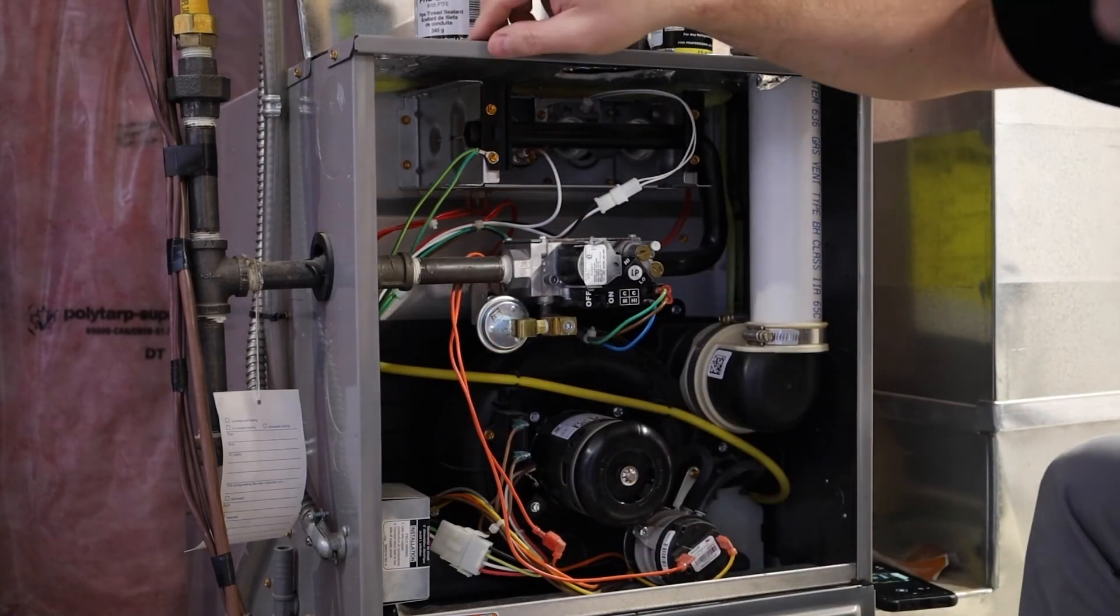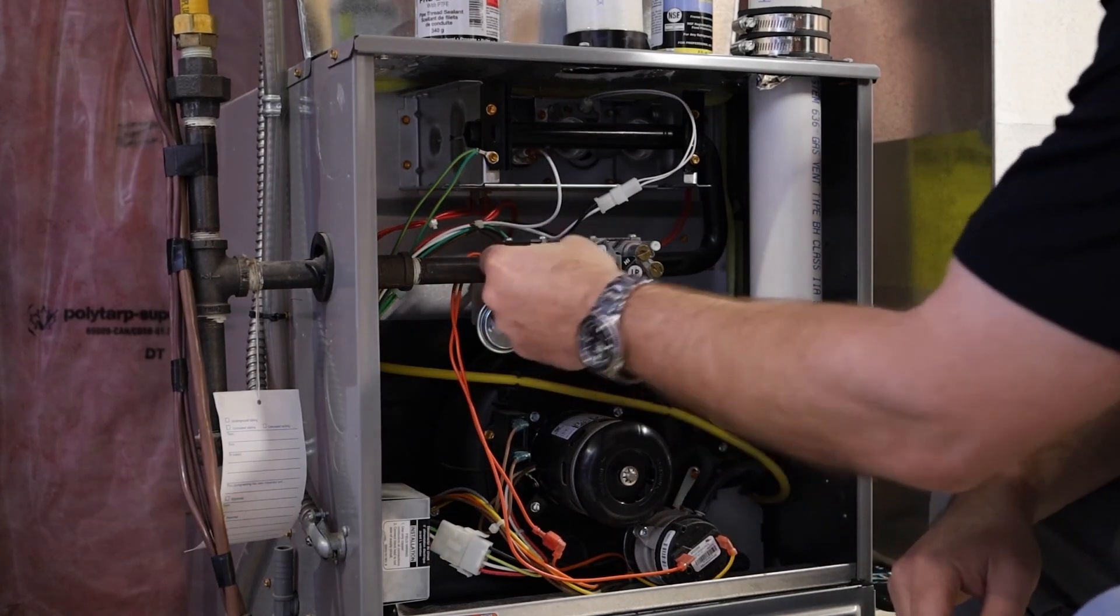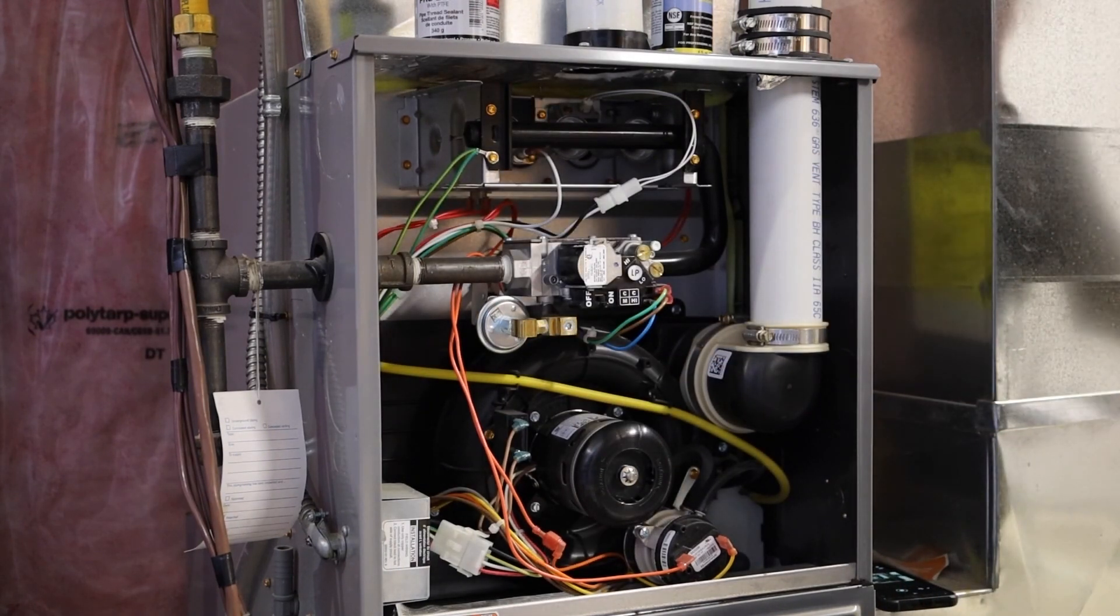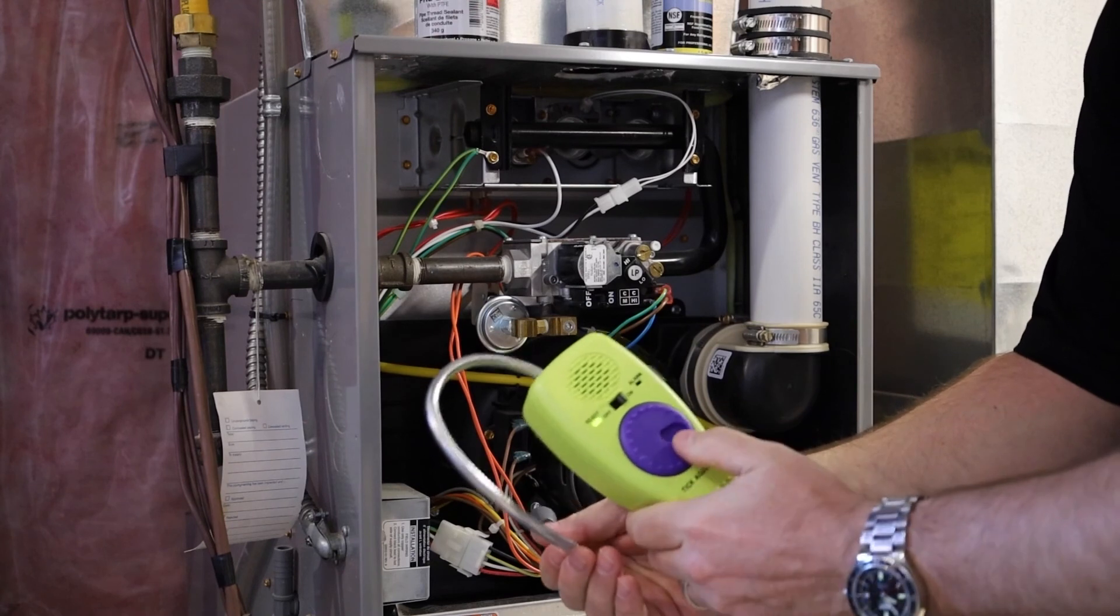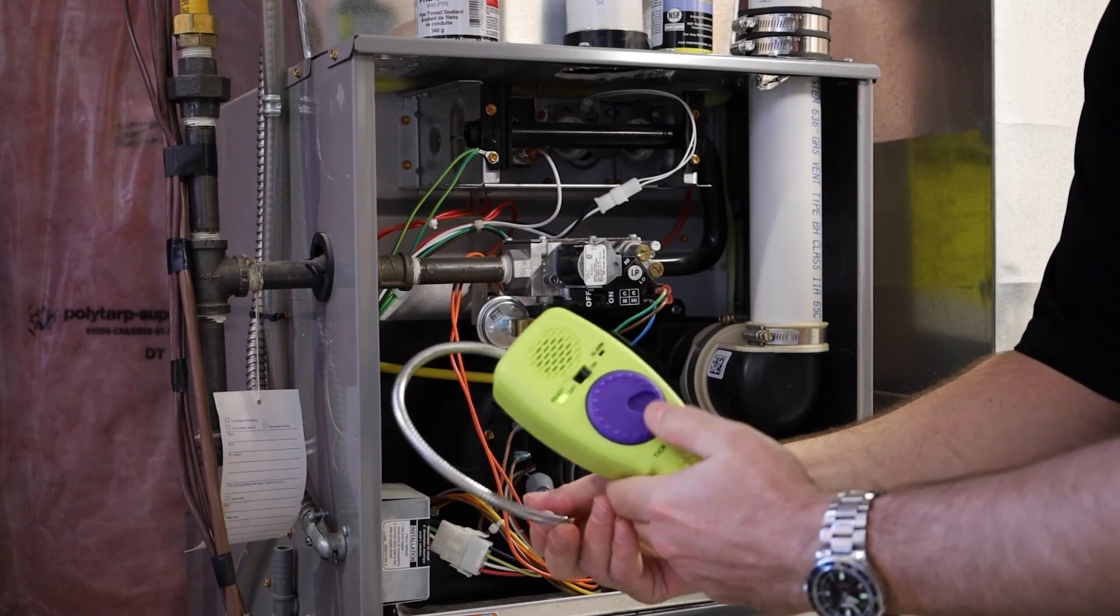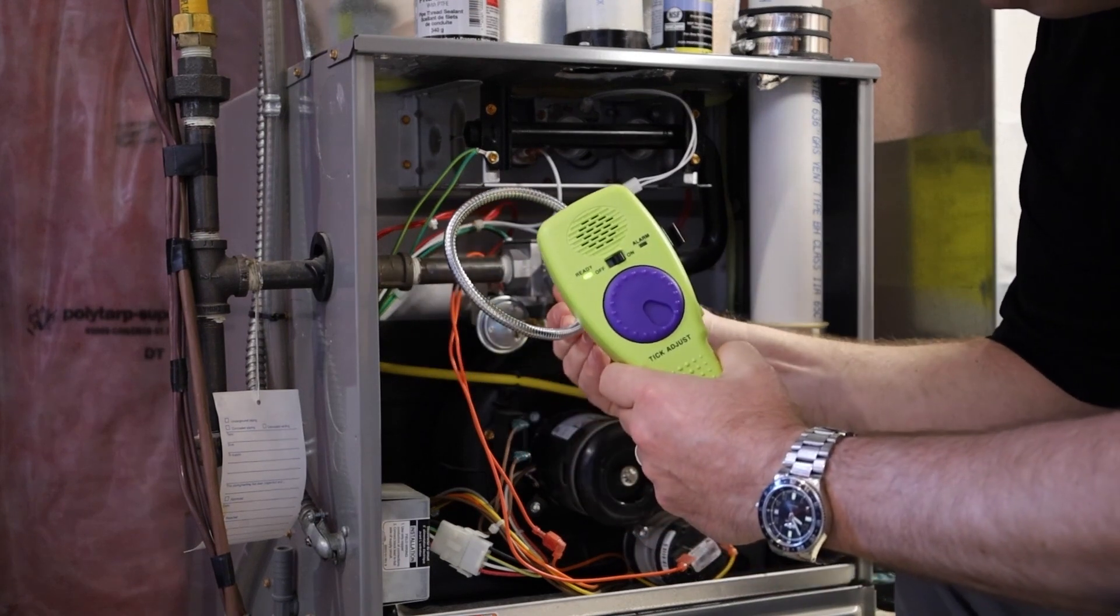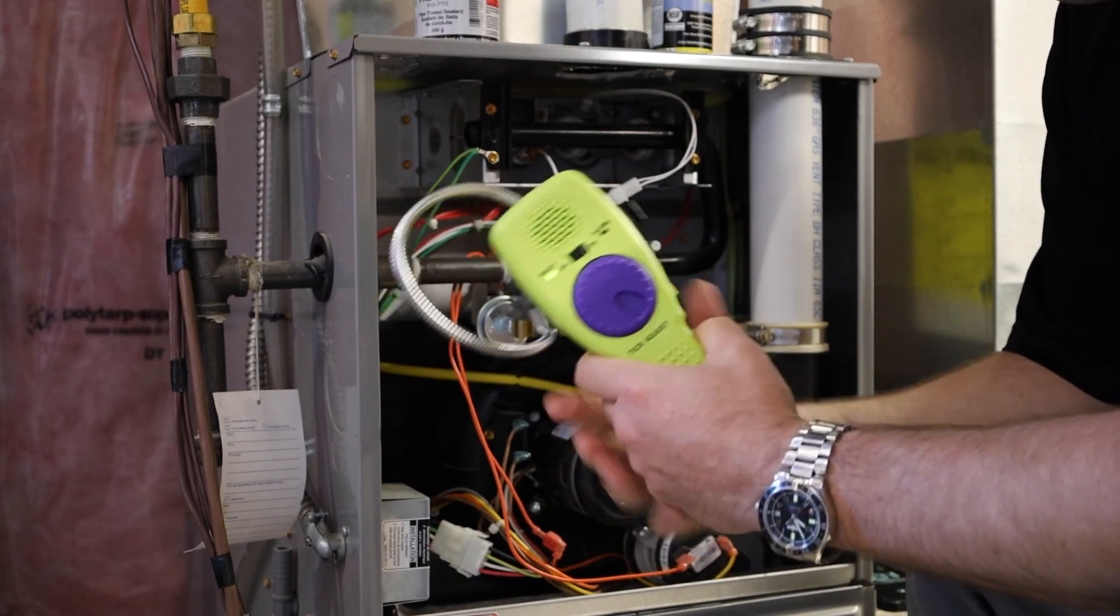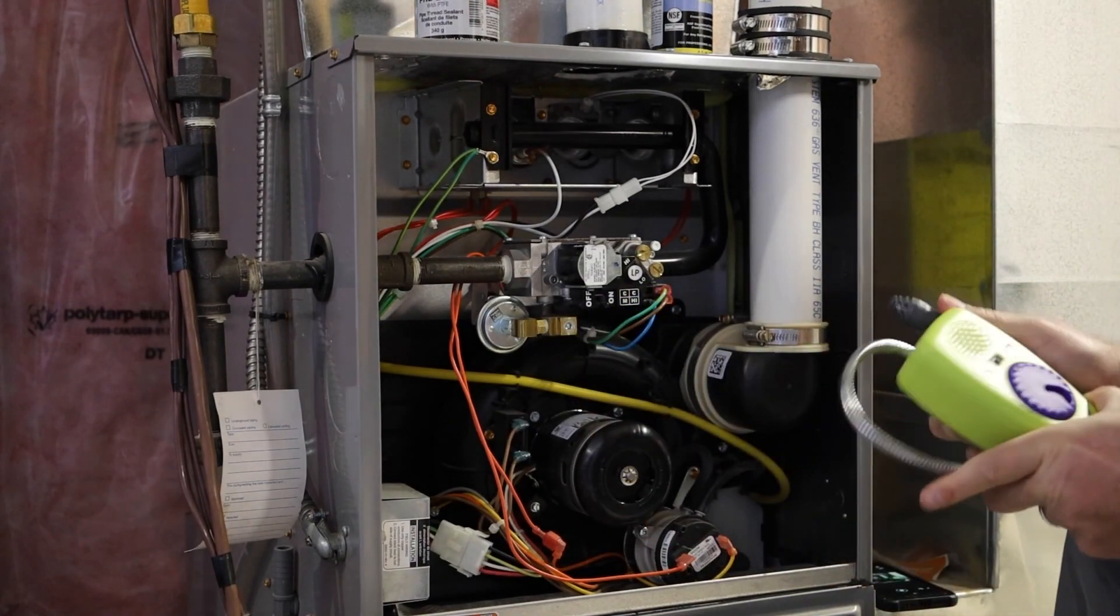Last thing. I'll obviously simulate a leak here. Tighten this up. Using the 720B. Get to my steady state. And I'm going to check for my leak. And I've tightened it up, so of course, there's no leak right there. Safe to put the cover back on.